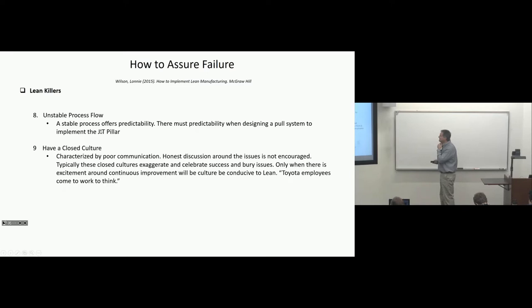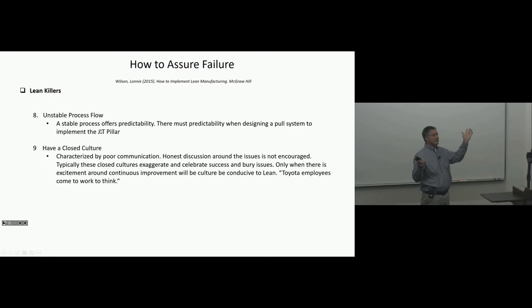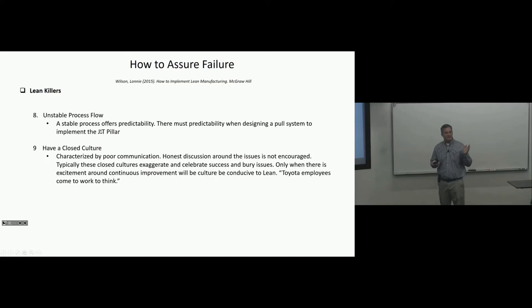Have a closed culture. Characterized by poor communication. Honest discussion around the issues is not encouraged. Typically those closed cultures exaggerate and celebrate success and bury issues. Only when there is excitement around continuous improvement will the culture be conducive to lean. Toyota employees come to work to think. So many organizations, they can't say, we're not doing a good job here, we're failing, or they can't say, hey, here's a problem. They can't expose it for fear of being put at risk because they're exposing problems that are related to the area that they're running. And that's a difficult thing to do, changing that culture. But people should come to work to improve. And they should be excited about improvement. The product makes itself. The standards and the systems in place, it's autopilot. The product should flow through the system. People, team leaders, they ought to be able to manage that. Everyone else, you're there to improve. So you must be very open about all the problems if you're going to solve them. But this is a real thing. It might be hard for me to communicate this, but everybody tries to cover up failure and hide from it.